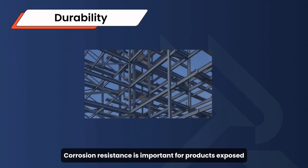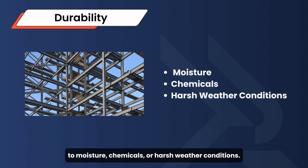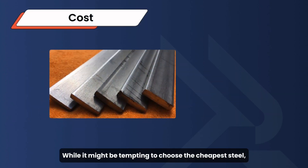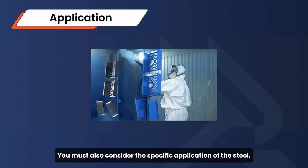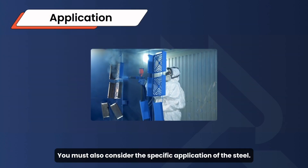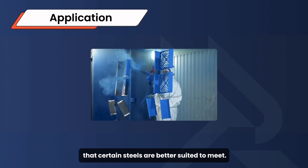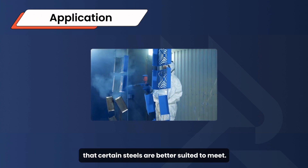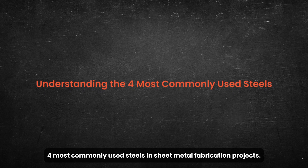Corrosion resistance is important for products exposed to moisture, chemicals, or harsh weather conditions. While it might be tempting to choose the cheapest steel, it is important to balance cost with the required performance. You must also consider the specific application of the steel, as different applications have unique requirements that certain steels are better suited to meet. Now let's take a look at the four most commonly used steels in sheet metal fabrication projects.